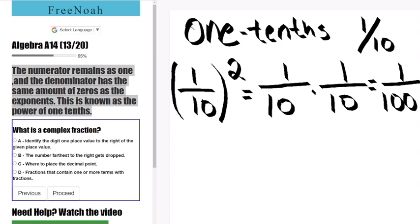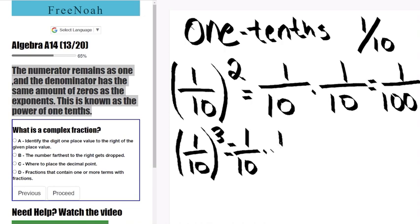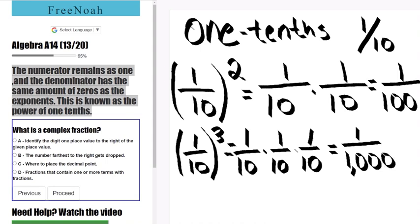Let's go ahead and bump up the power by one. We're going to write one over ten cubed, to the third power. This will rewrite as one over ten times one over ten times one over ten, giving us a final solution of one over one thousand.